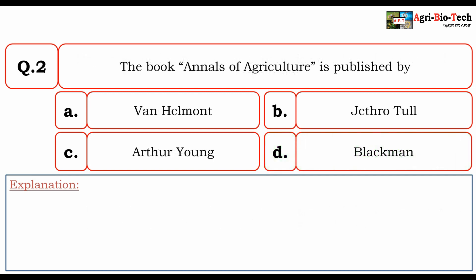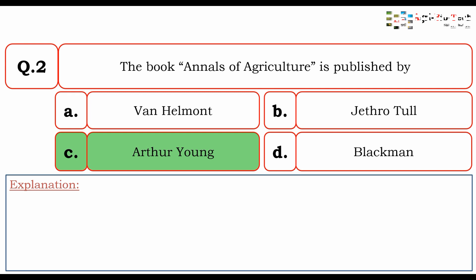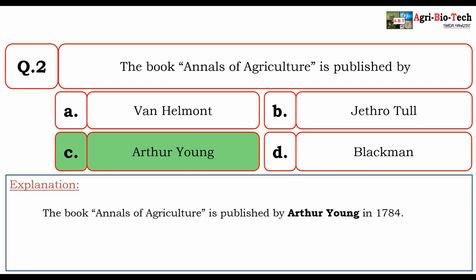Next question: The book 'Annals of Agriculture' is published by? The options are Van Helmont, Jethro Tull, Arthur Young, and Blackman. The correct option is C. Arthur Young. The book 'Annals of Agriculture' was published by Arthur Young in 1784. So the correct answer is C. Arthur Young.